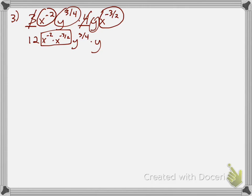If you're multiplying like bases you add the exponents, so I have to add negative 2 plus negative three-halves. What makes this tricky is the fractions. I can get a common denominator of 2, so negative 2 becomes negative four-halves. Then negative four-halves plus negative three-halves is negative seven-halves. So I have 12 in front and the new exponent for x is negative seven-halves.